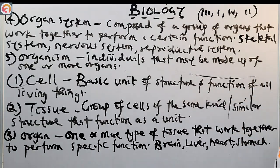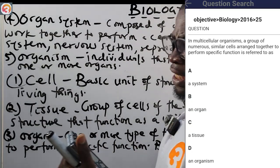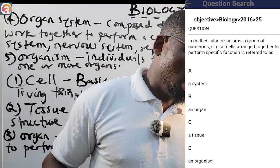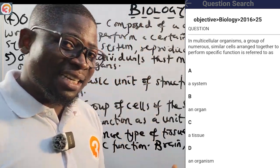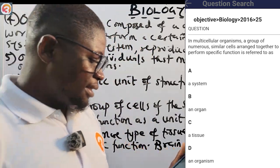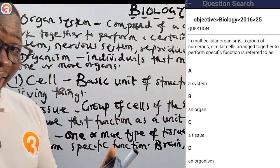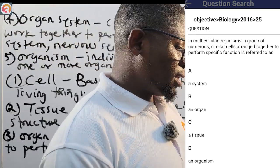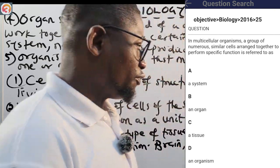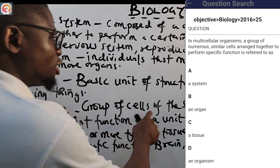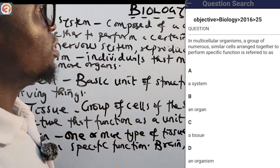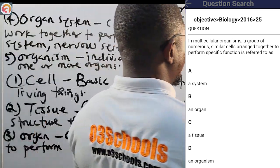2016 number 25: in multicellular organisms, a group of numerous similar cells arranged together to perform a specific function — what is that called? We defined tissue as a group of cells of the same kind or similar structure that perform a function as a unit. So the correct answer is tissue, which is option C.